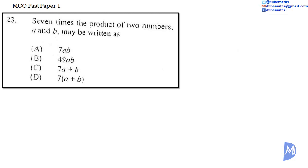Question 23. 7 times the product of two numbers, A and B, may be written as A: 7AB, B: 49AB, C: 7A plus B, or D: 7 multiplied by, in brackets, A plus B.